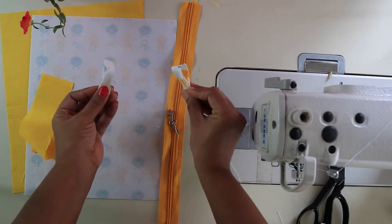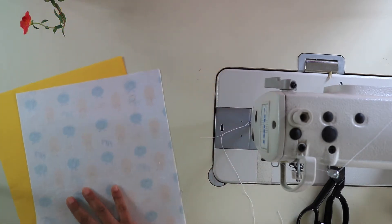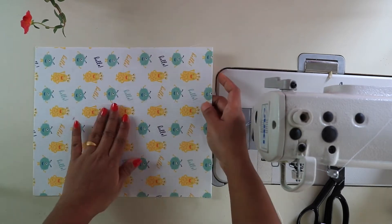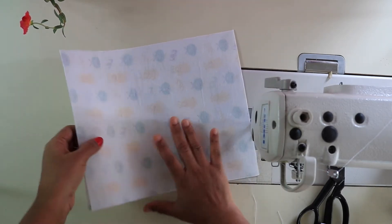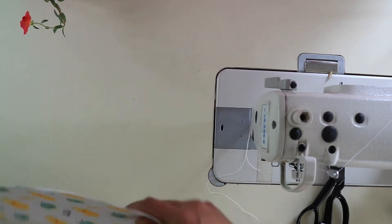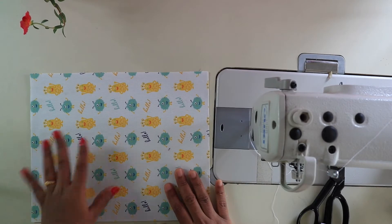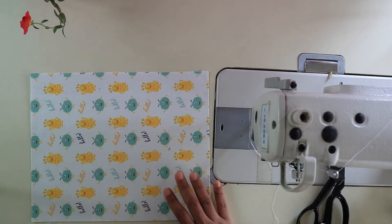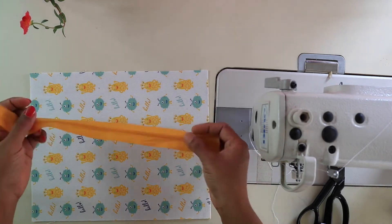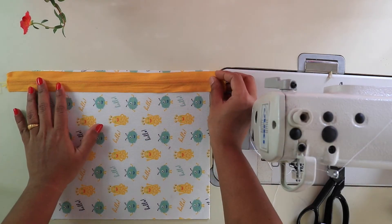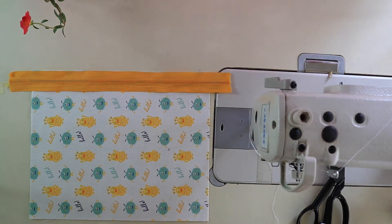To begin, first fuse interfacing to the wrong side of the fabric. I have already fused my fabric. Now lay your main fabric with right side facing up, then place the zipper with right side of zipper facing down on the longest side of fabric.